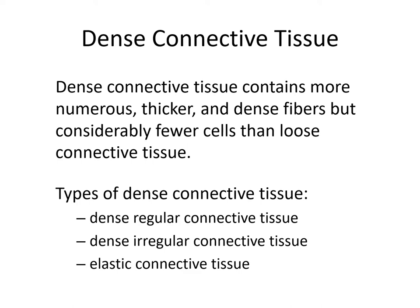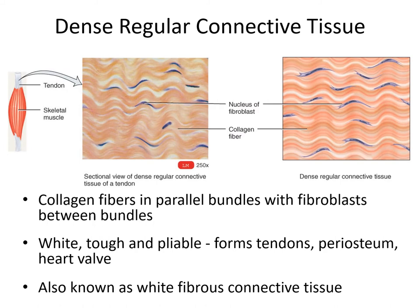Dense regular connective tissue contains mostly collagen, found in thick bundles that run parallel to each other. The bundles orient themselves in the direction of stress generated within the tissue. A nice example would be tendons, found at the ends of muscles, connecting the belly of a muscle to a bone. The muscle contracts, generates tension, and that tension is transferred through the tendon to the bone. The collagen fibers are like ropes transferring that tensional force to bone.